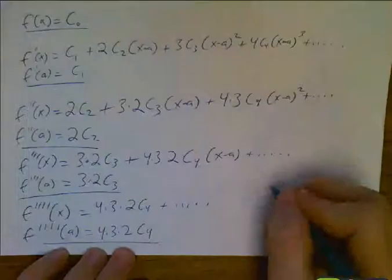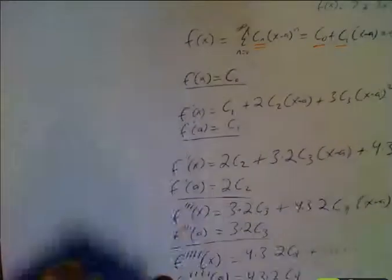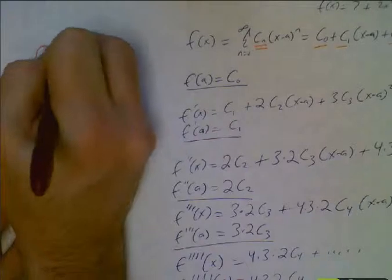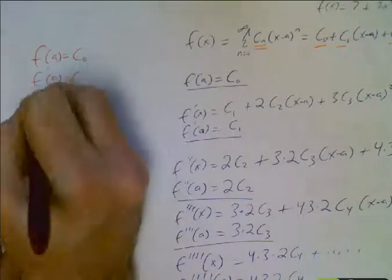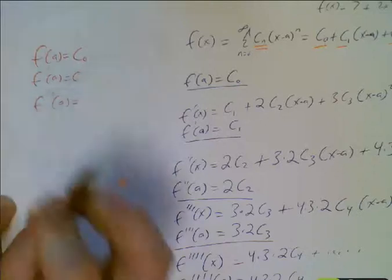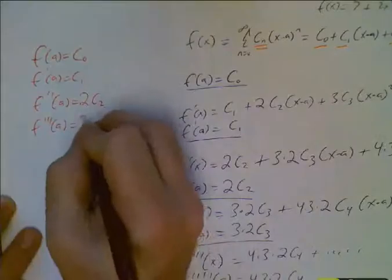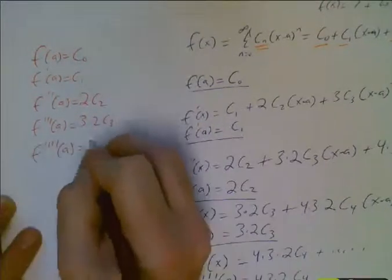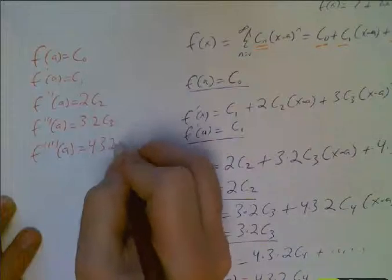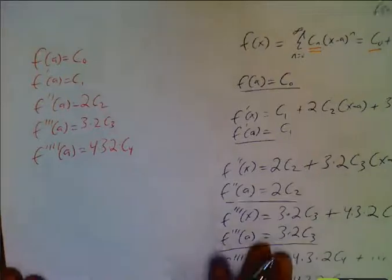We have f of a. Let me just summarize it over here. I'll actually do it on a new sheet here. I'm running out of room here. Okay, so f of a was c sub zero. f prime of a was c sub one. f double prime of a was two c two. f triple prime was three times two c three. And f quadruple prime was four times three times two times c four.